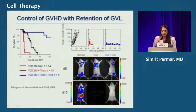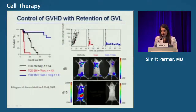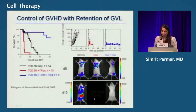In terms of controlling GVHD with retention of GVL, a paper published in Nature Medicine looked at the effect of giving regulatory T cells along with conventional T cells and a bone marrow transplant. When you give conventional T cells, the mouse dies because of GVHD. But when you give regulatory T cells, there is preservation of the mouse both physiologically and via imaging.